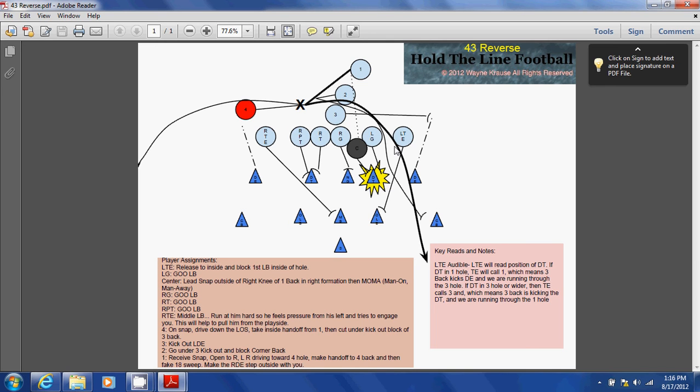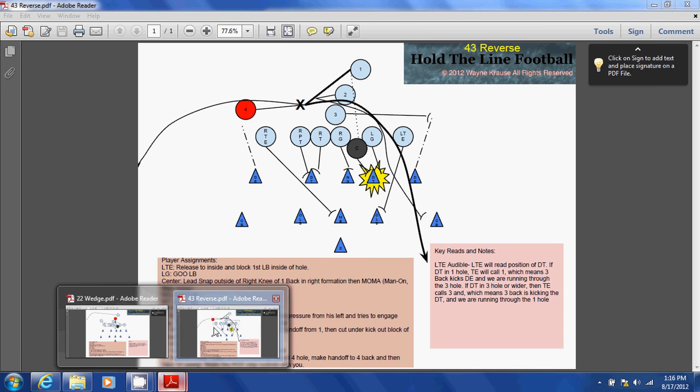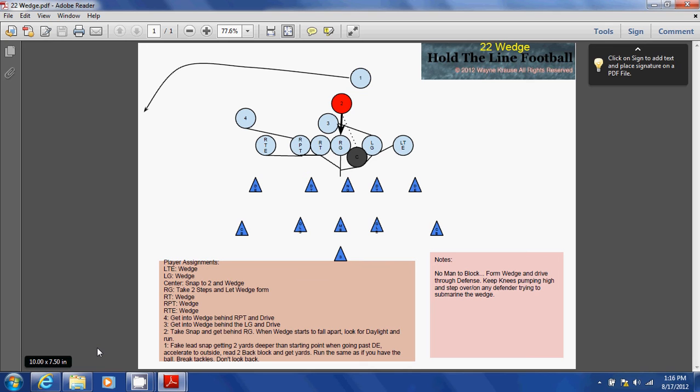So this is the 43 reverse. Now moving on to the 22 wedge. The 22 wedge is a different type of play than you've seen so far on these plays. So far it's a non-traditional play. It's based upon running a wedge formation that was very popular back in the original days of football.